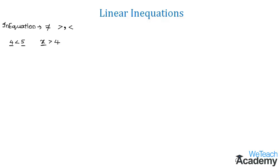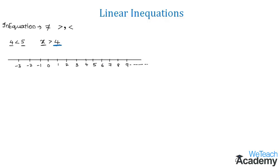Now let us represent this on a number line. First, let us mark all the numbers which are greater than 4 — so we have 5, 6, 7, 8, 9, and so on. Now let us check: if x is less than 4, does it satisfy the given inequation x greater than 4 or not?